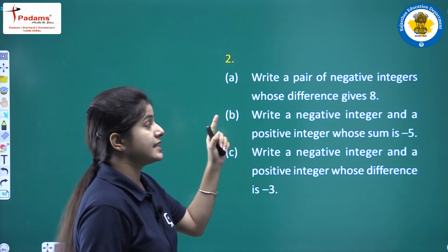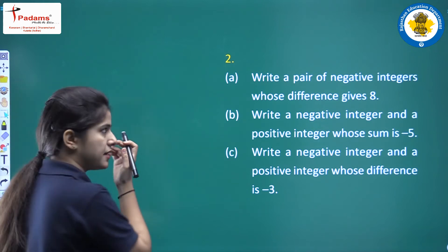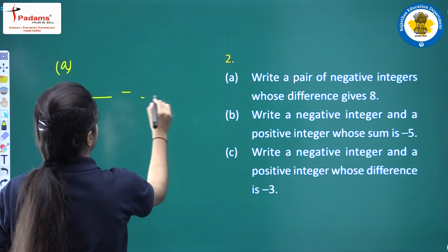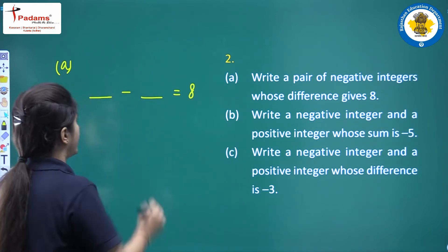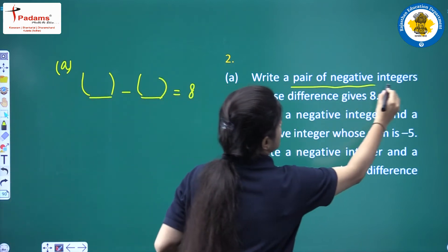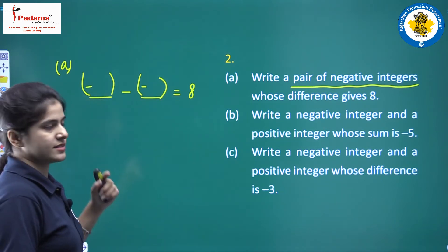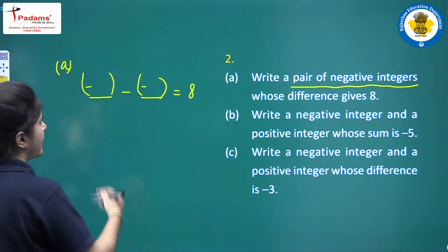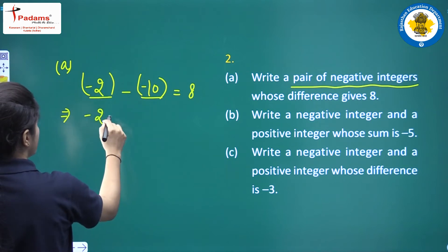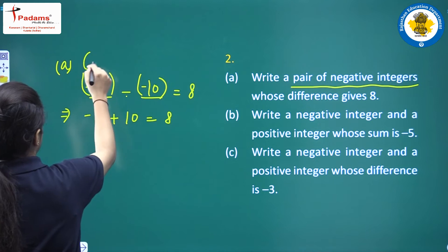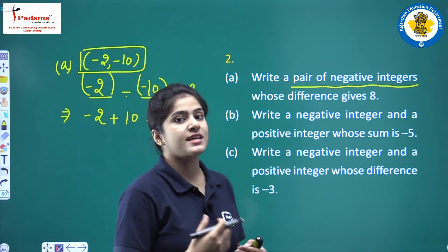Question two, part a: write a pair of negative integers whose difference gives eight. Both integers must be negative. If I consider minus 2 and minus 10, then minus 2 minus minus 10 equals 8. So the pair of integers is minus 2 and minus 10.